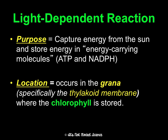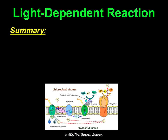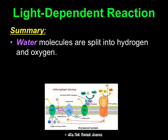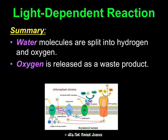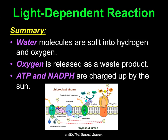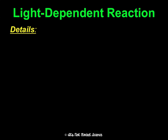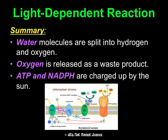The light-dependent reaction happens first — D comes before I in the alphabet. The big-picture purpose is to capture energy from the sun and store it in energy-carrying molecules: ATP and NADPH. These will then power the second, light-independent step, since that step can't be powered by sunlight directly. This happens in the grana, specifically in the thylakoid membrane, because that's where chlorophyll is — the pancakes come first, then the syrup. At a minimum, remember: water is split, ATP and NADPH get charged up by solar energy, and oxygen is released as a byproduct.